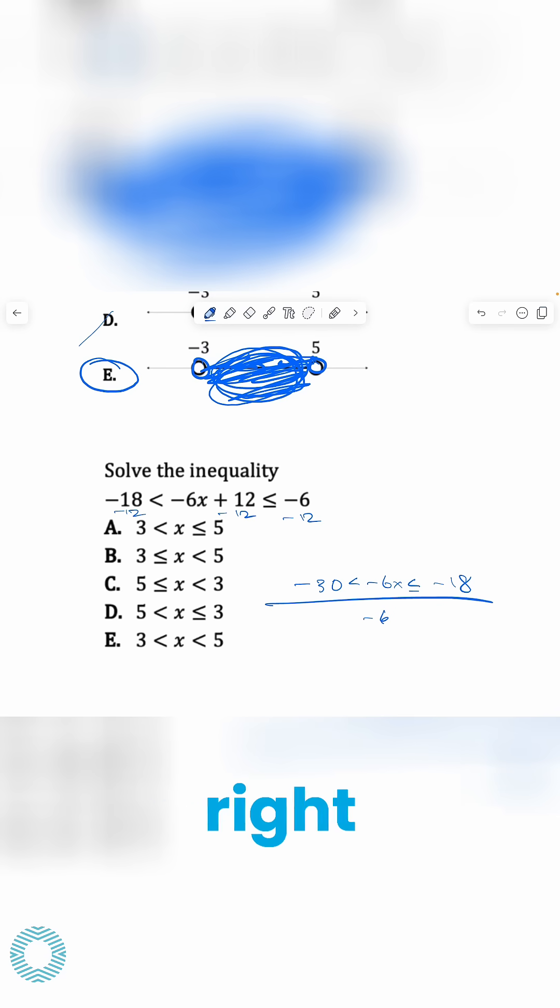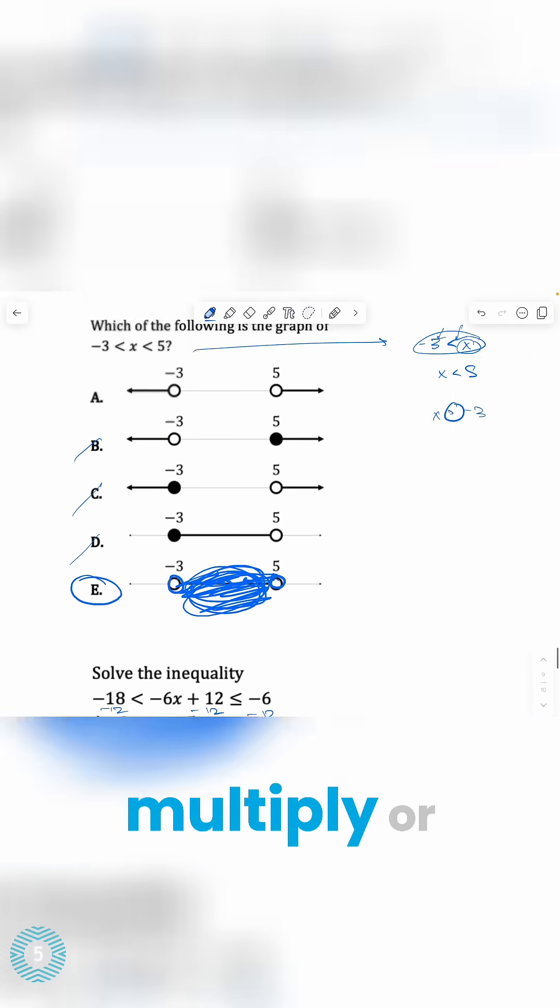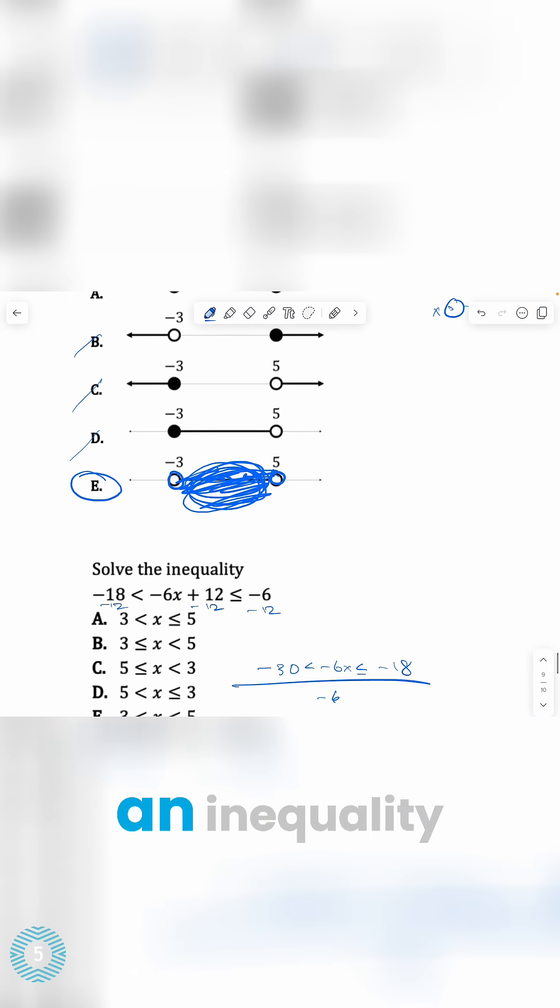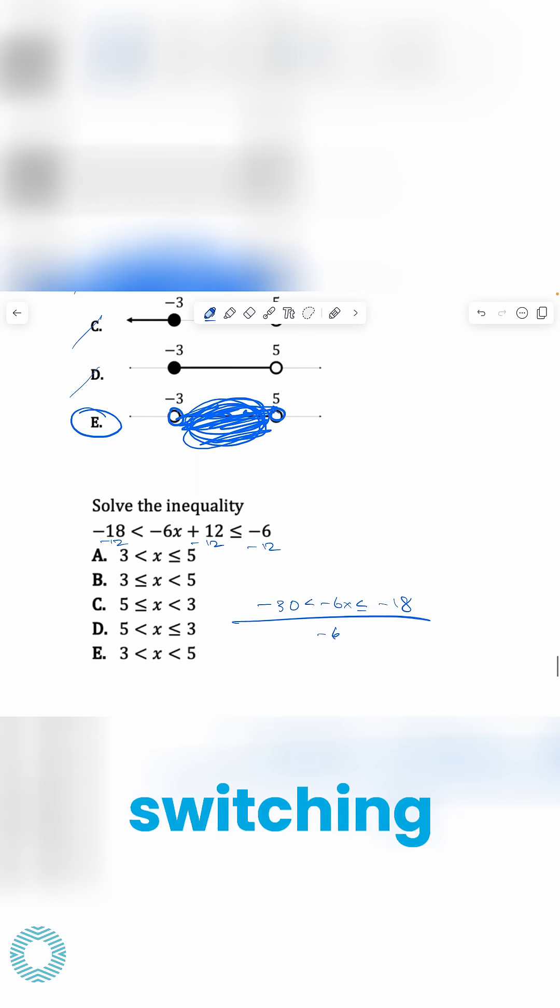Divide everything by negative six, right? Again, we're trying to isolate x. And again, remember, when you multiply or divide an inequality by a negative number, you end up switching the directions of the signs. So you're going to think, okay, the answer is negative 30 divided by negative six, which is five, is less than x is less than or equal to three, right?